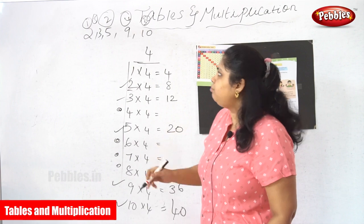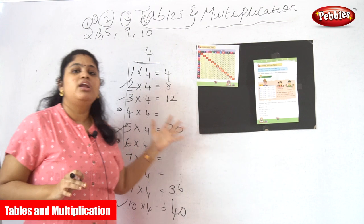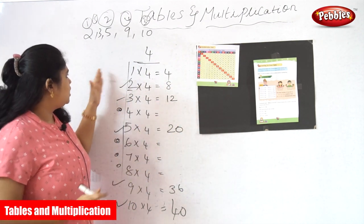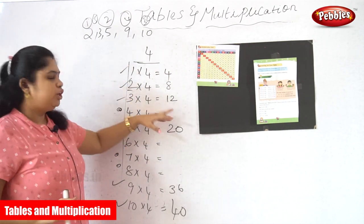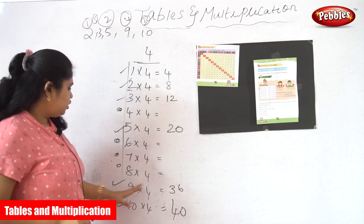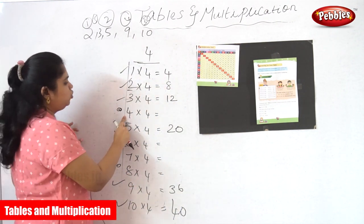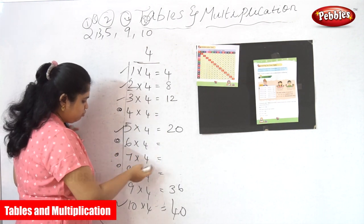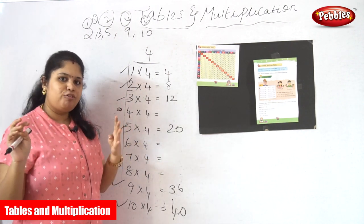So after you are very well versed in 2, 3, 5, 9 and 10, the remaining tables will be very easy. We already know: 1 into 4, 2 into 4, 3 into 4, 5 into 4, 9 into 4 and 10 into 4. So the remaining ones we have to learn are only 4 into 4, 6 into 4, 7 into 4 and 8 into 4 — only 4 numbers. This is the skip counting by 4 method.